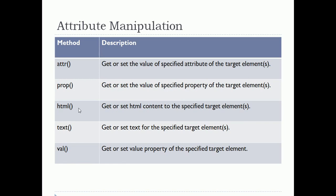In attribute manipulation we already saw the html and text methods while studying selectors. Suppose you want to get the HTML content of a specified element, you can use the html method. It is used not only to get the HTML but also to set it. Similarly, the text method is there — suppose you want to get the text of an element, you can use the text method and also set the text.